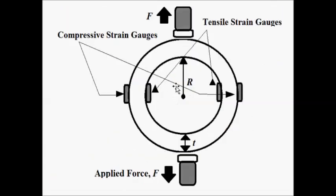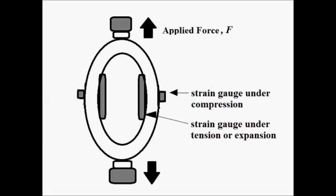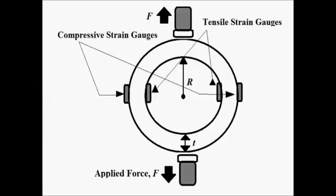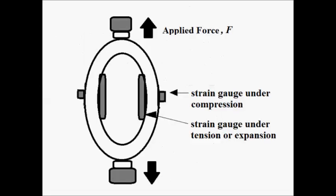In summary, the proving ring type load cell is a circular ring of mean radius R and radial thickness t. The force to be measured is applied at the two ends — top and bottom — in the specified direction. Because of the applied force the circular ring becomes elliptical. Four strain gauges are placed — two on the inner side and two on the outer side — and the outer strain gauges undergo compression while the inner strain gauges undergo tensile strain.